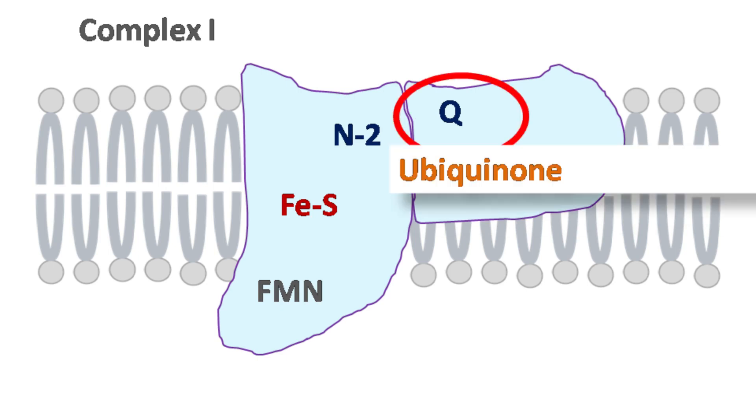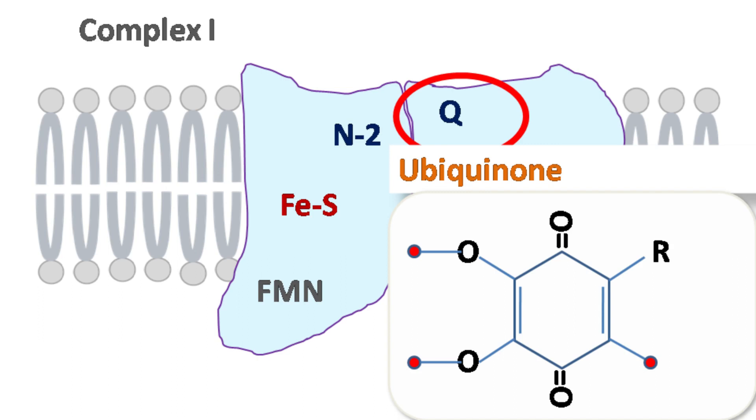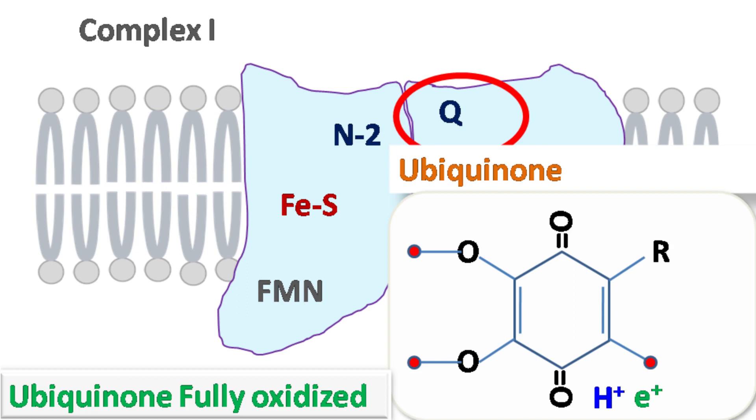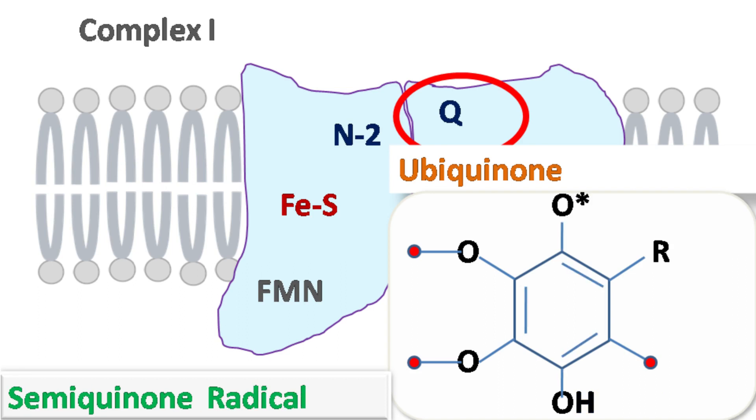Q is ubiquinone, also known as coenzyme Q. It is a lipid-soluble molecule that has a role in electron transport chain. Ubiquinone can accept one electron and one hydrogen to become semiquinone radical. The semiquinone radical can further accept one electron and one hydrogen to become ubiquinol.